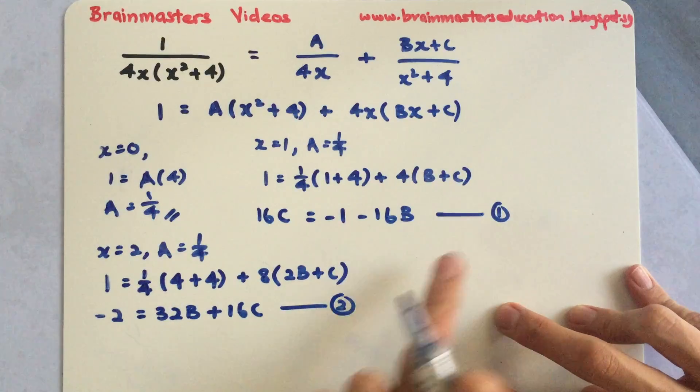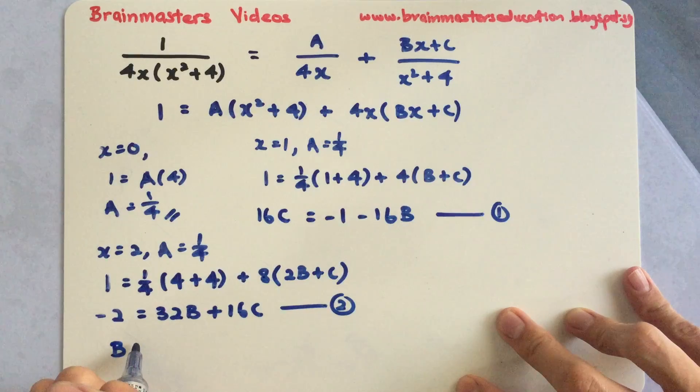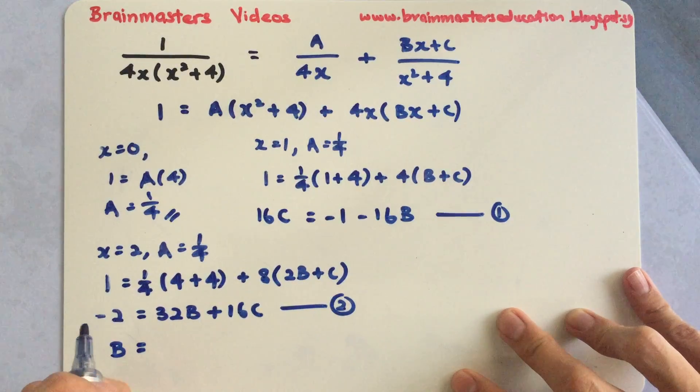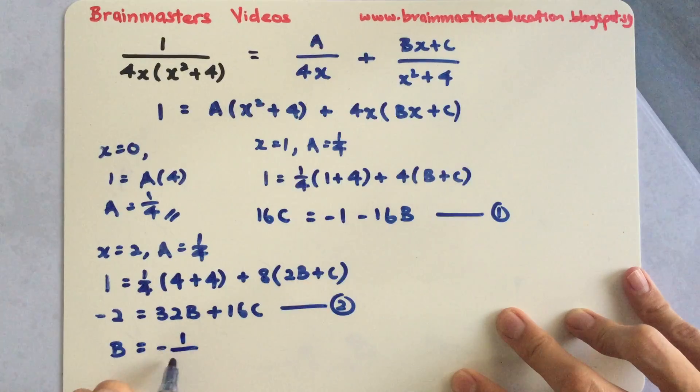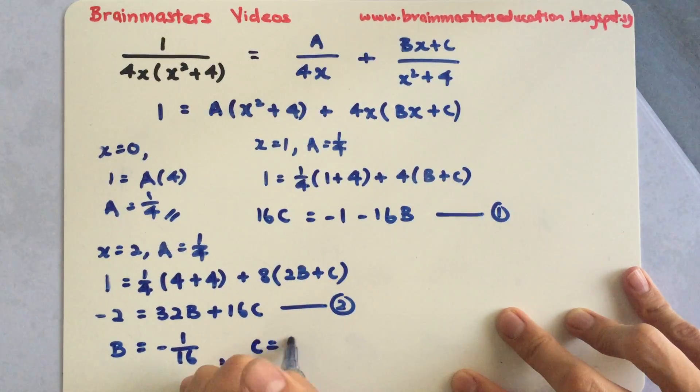I will substitute equation 1 into equation 2. From here, I will be able to solve my B equals to negative 1 over 16. And I will also be able to find my C is actually equals to 0.